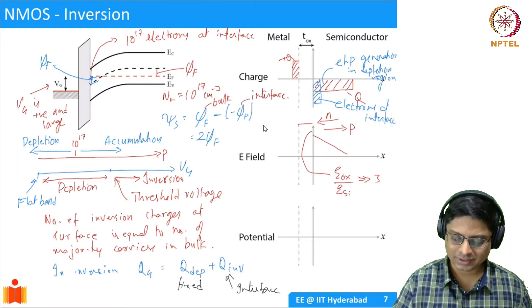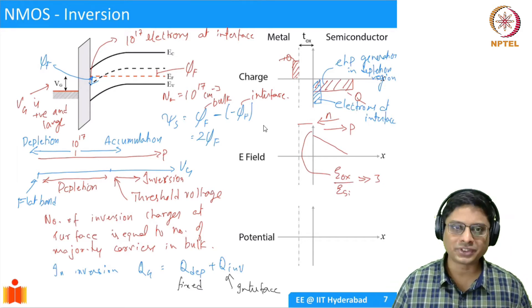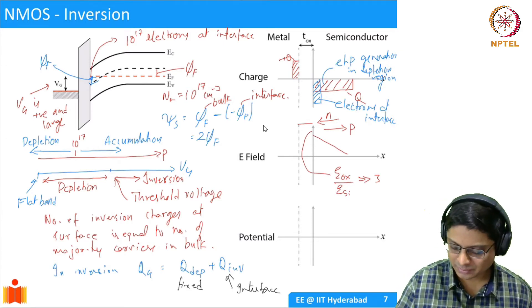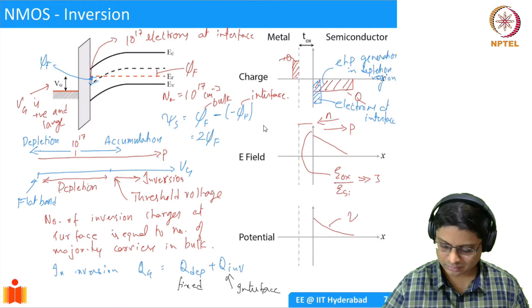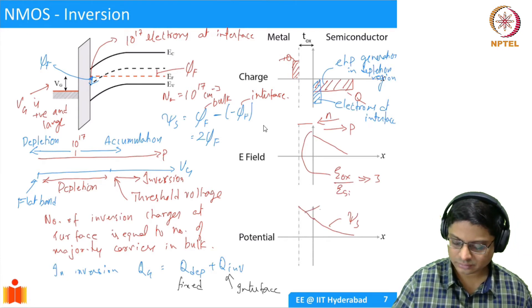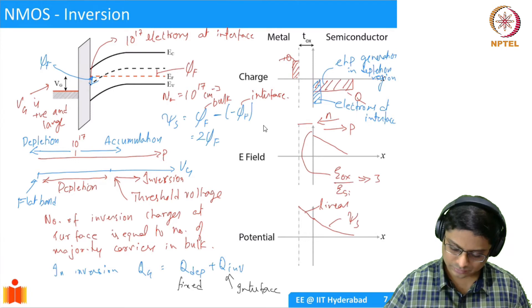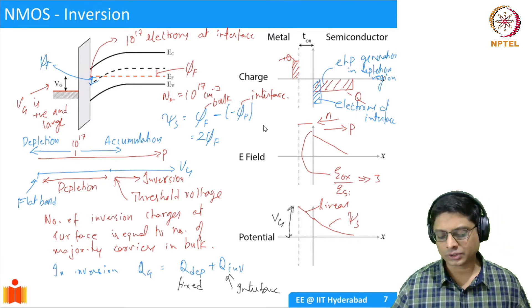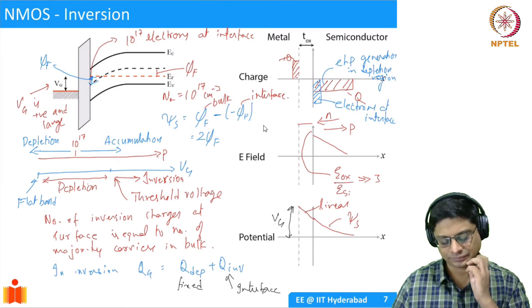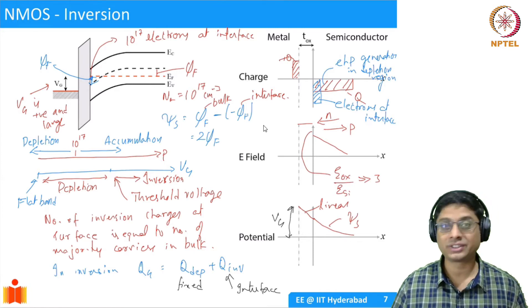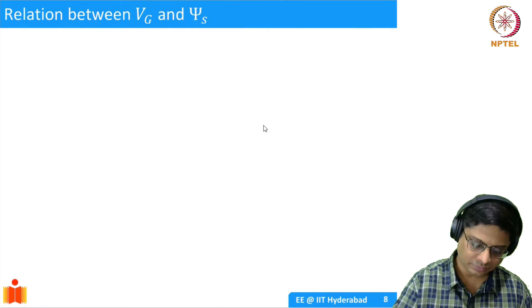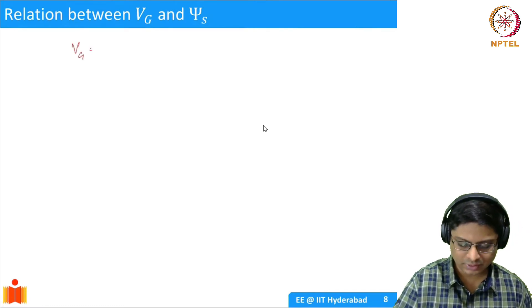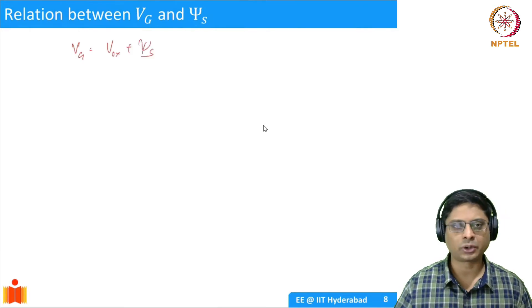If you are right at inversion, the potential has a quadratic behavior in the semiconductor — this is psi_s — and then a linear variation across the oxide, and the total is VG. The voltage always falls across both the oxide and the semiconductor. This will help us derive the relation between gate voltage and psi_s. At threshold, psi_s is 2*phi_f, which is something we can easily compute. The relation is: VG equals the oxide potential plus the surface potential.